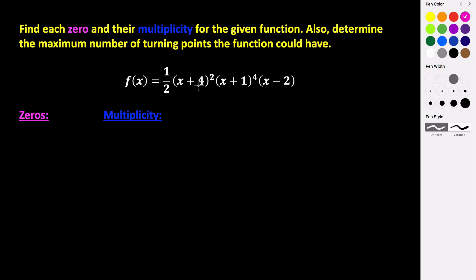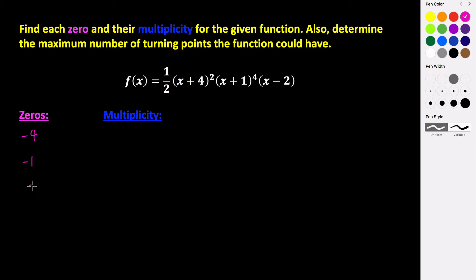So x plus four — if that's equal to zero, then we get a zero of negative four. That's our first zero. For x plus one, if we set that equal to zero, we get negative one as a zero. And then x minus two, if we set that equal to zero, we get positive two as a zero.